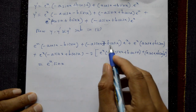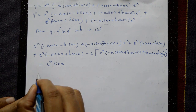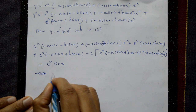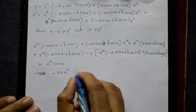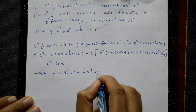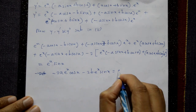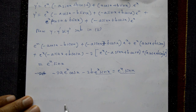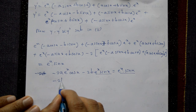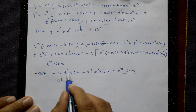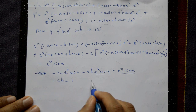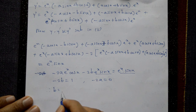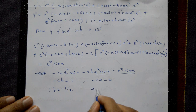Opening all brackets, cancelling terms, we finally get: −2a·eˣ cos x − 2b·eˣ sin x = eˣ sin x. Taking the coefficient of eˣ sin x on both sides: −2b = 1, and taking the coefficient of eˣ cos x: −2a = 0. Therefore a = 0 and b = −1/2.